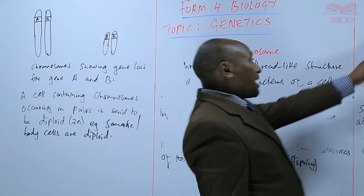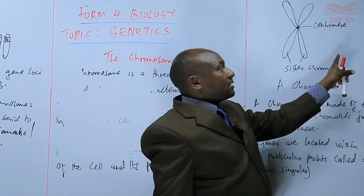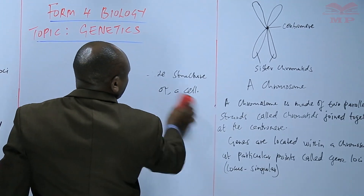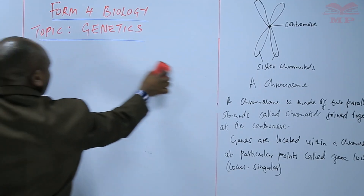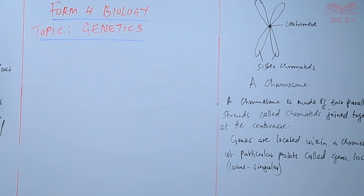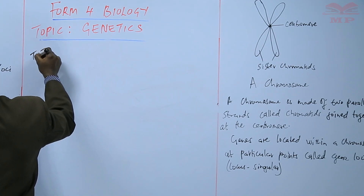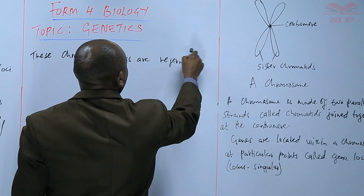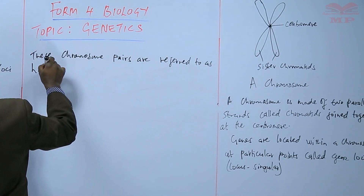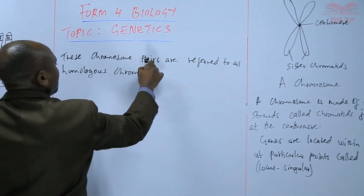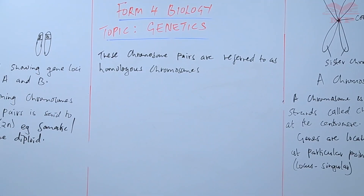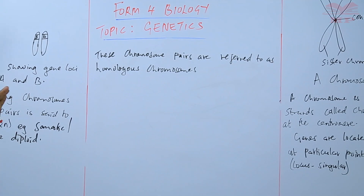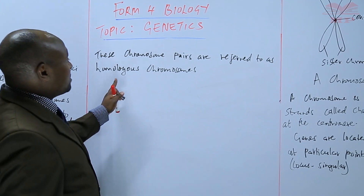Somatic cells have their chromosomes not existing as just a single chromosome but as pairs — each one and its corresponding member of the pair. These chromosome pairs are referred to as homologous chromosomes. So whereby a cell has chromosomes existing in pairs, that state we call diploid, but the chromosomes themselves that exist in pairs we refer to as homologous chromosomes.